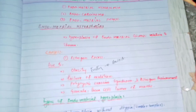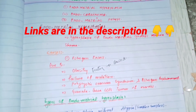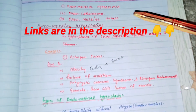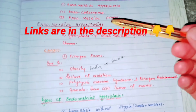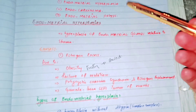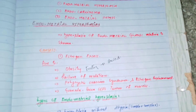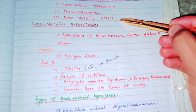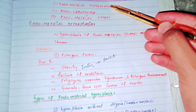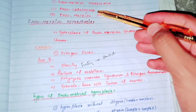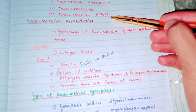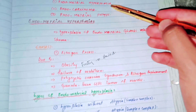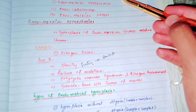In a previous video I talked about the inflammatory conditions of the uterus and endometriosis. In this video I am going to talk about the proliferative lesions of the endometrium. There are three proliferative lesions: one is endometrial hyperplasia, the second is endometrial carcinoma, and the third is endometrial polyps. Today I will focus on endometrial hyperplasia.